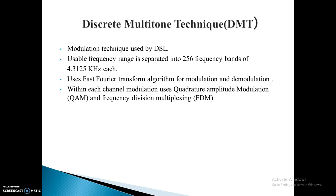DMT, or Discrete Multi-Tone technique, is a modulation technique used by DSL. The usable frequency range is separated into 256 sub-carrier frequency bands of 4.3125 kilohertz each. DMT uses the Fast Fourier Transform algorithm for modulation and demodulation. Dividing the frequency spectrum into multiple channels allows DMT to work more efficiently. Within each channel, modulation uses Quadrature Amplitude Modulation (QAM) and Frequency Division Multiplexing (FDM). By varying the number of bits per symbol within a channel, the modem can be rate adaptive.